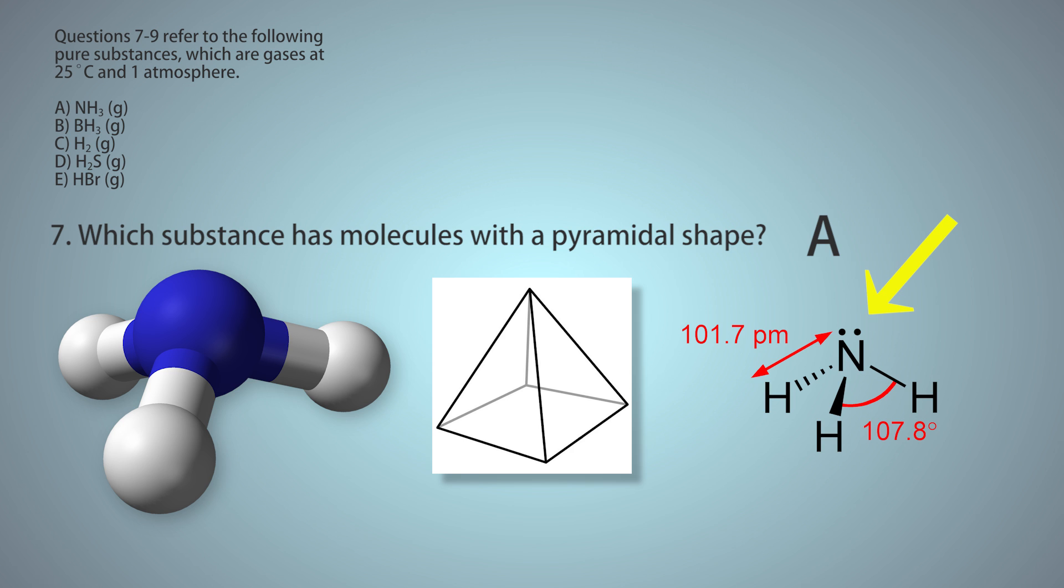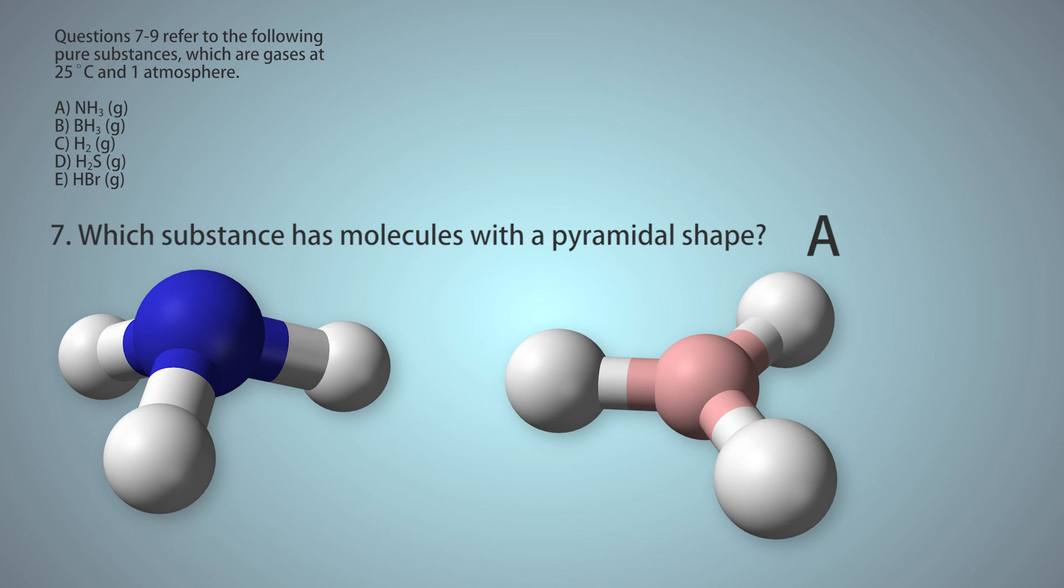BH3 doesn't have any extra electrons, so it forms a trigonal planar shape. So you'd want to review VSEPR theory to understand this question.